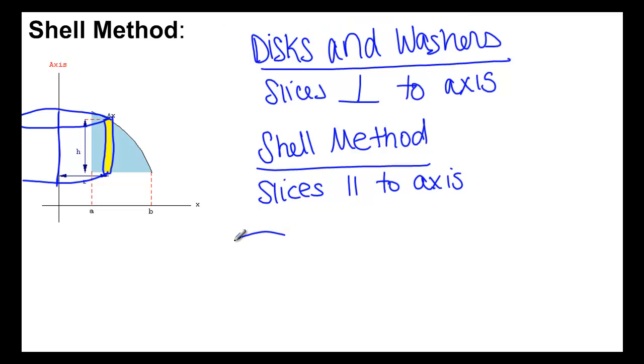So if we take our little cylindrical shell, the actual thickness of it is just going to be coming from right here, our delta x. But what about the rest of the volume? If we try to find this volume exactly, it's going to be a really complicated formula.